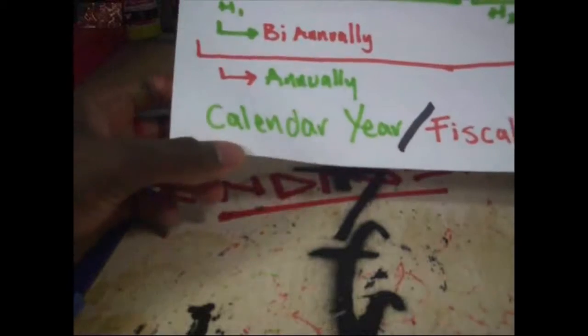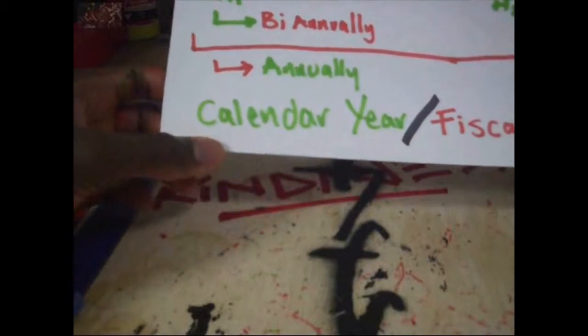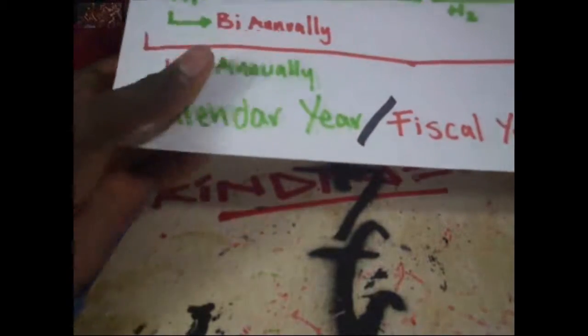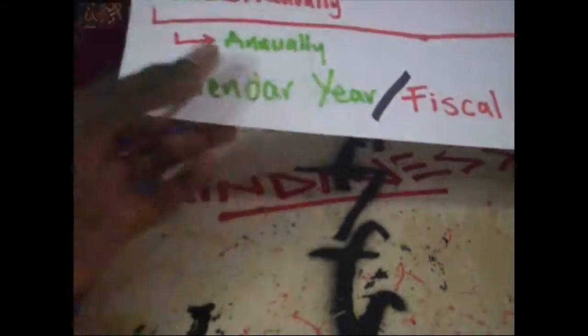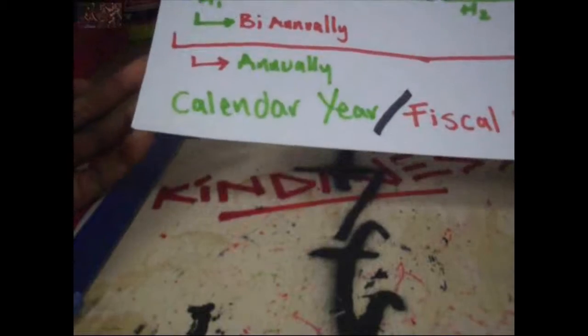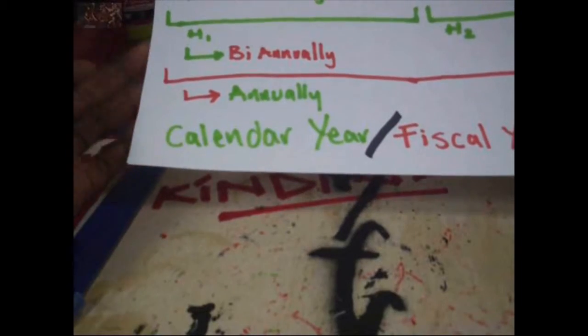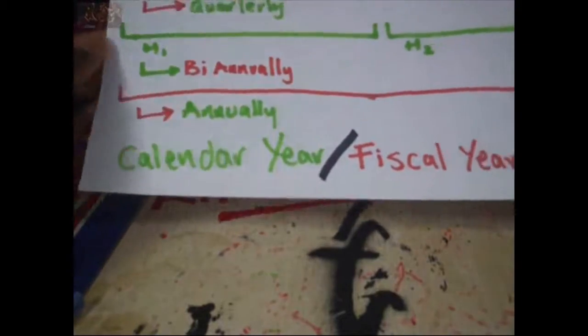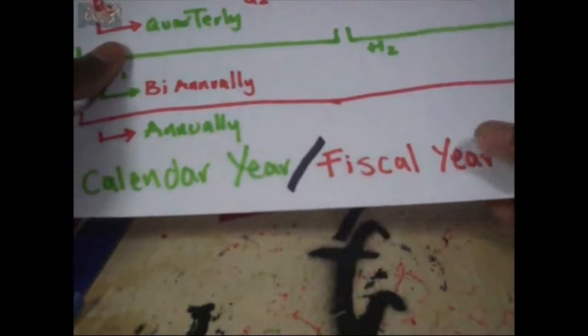And then annually — obviously one big line, which is just the year. Speaking of annually, we have the year. We can have a calendar year, which just means January 1st to December 31st — that's the calendar year.